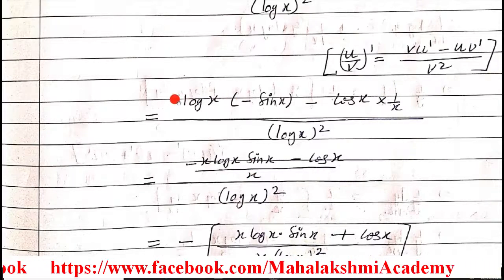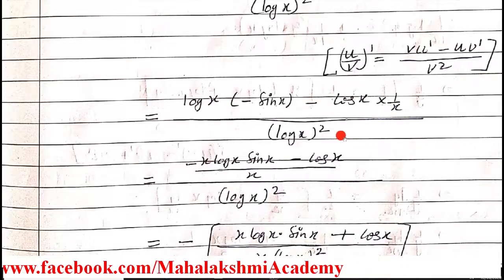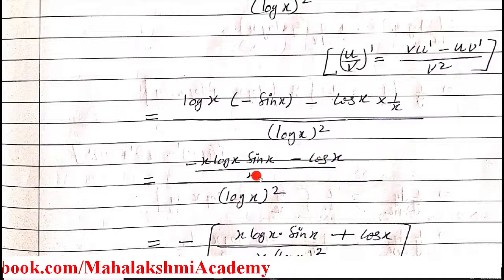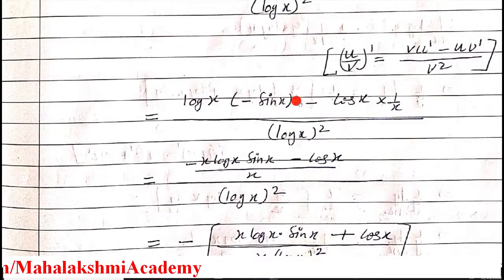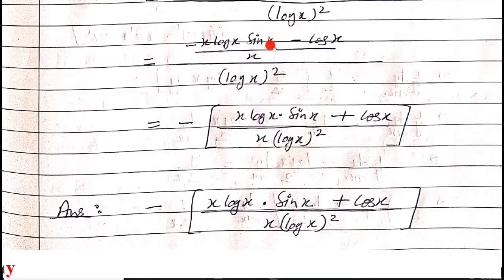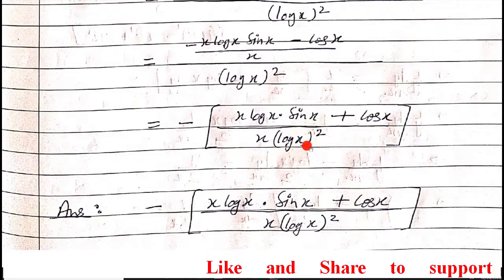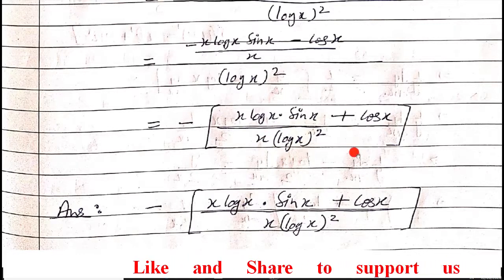After taking the LCM, a minus sign comes in front and x appears in the numerator, giving minus x log x sin x minus cos x. Since both terms have a minus sign, we factor it out. We cannot simplify further, so this is our answer for part a of question 8.